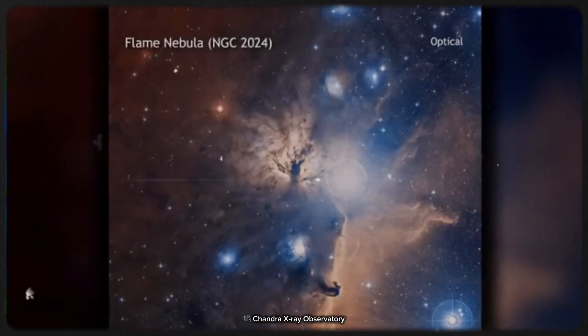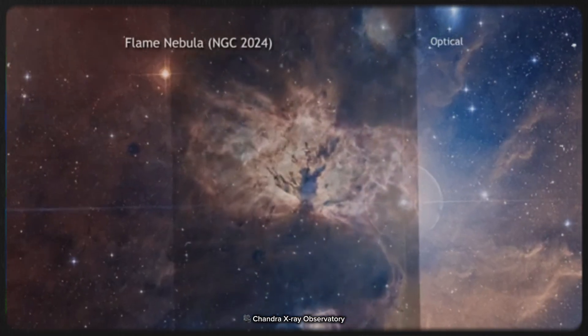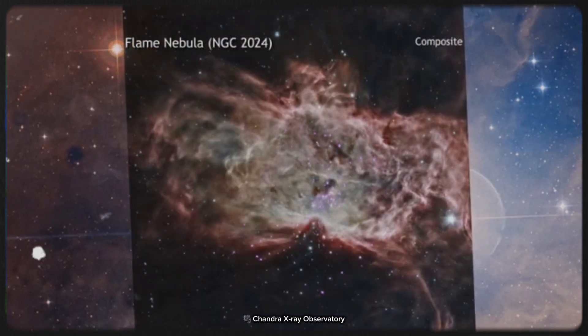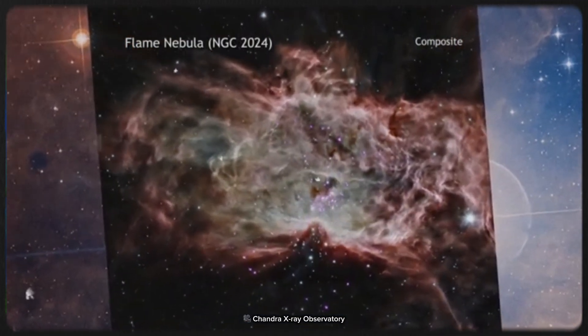Among those regions lies the Flame Nebula, a dense, glowing cloud of gas and dust just 1,400 light-years from Earth. It's a nursery for baby stars, and nestled within it are some of the smallest, coldest brown dwarfs we've ever tried to find.